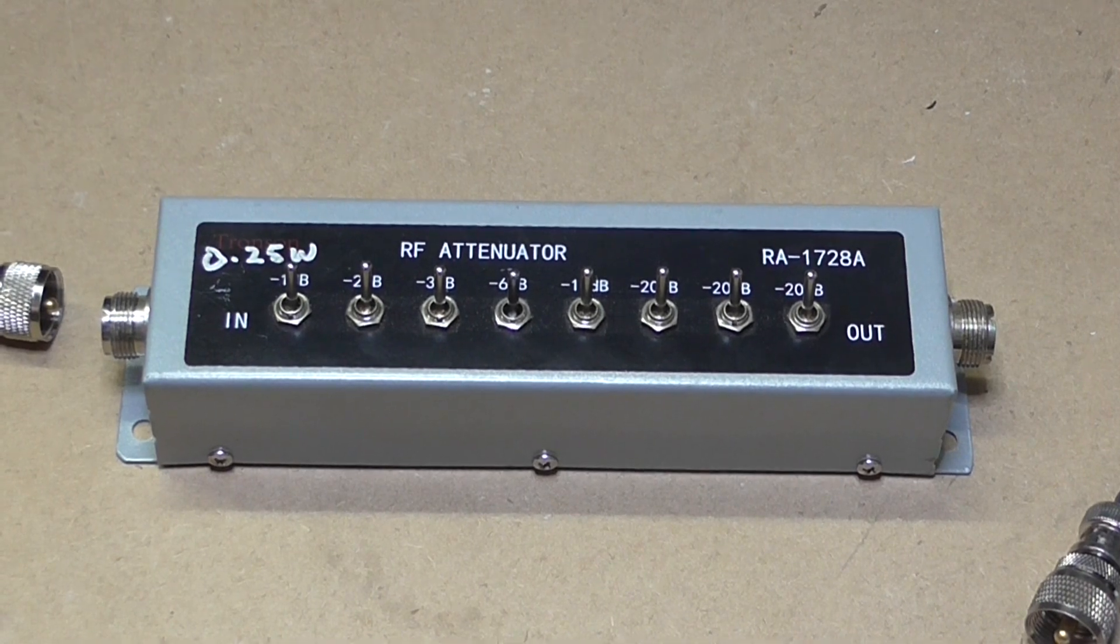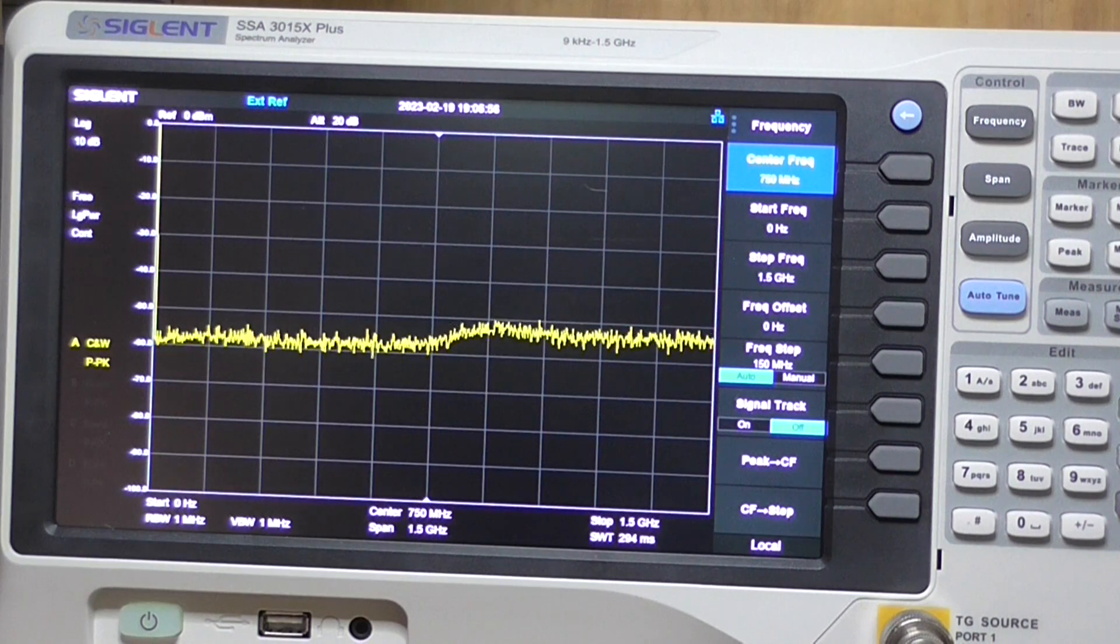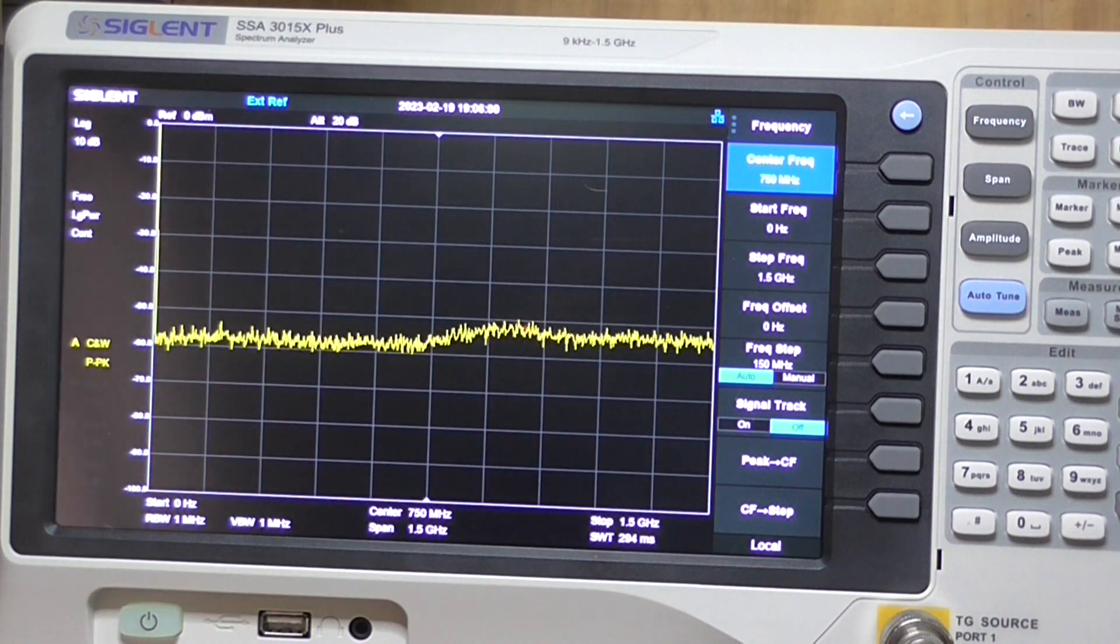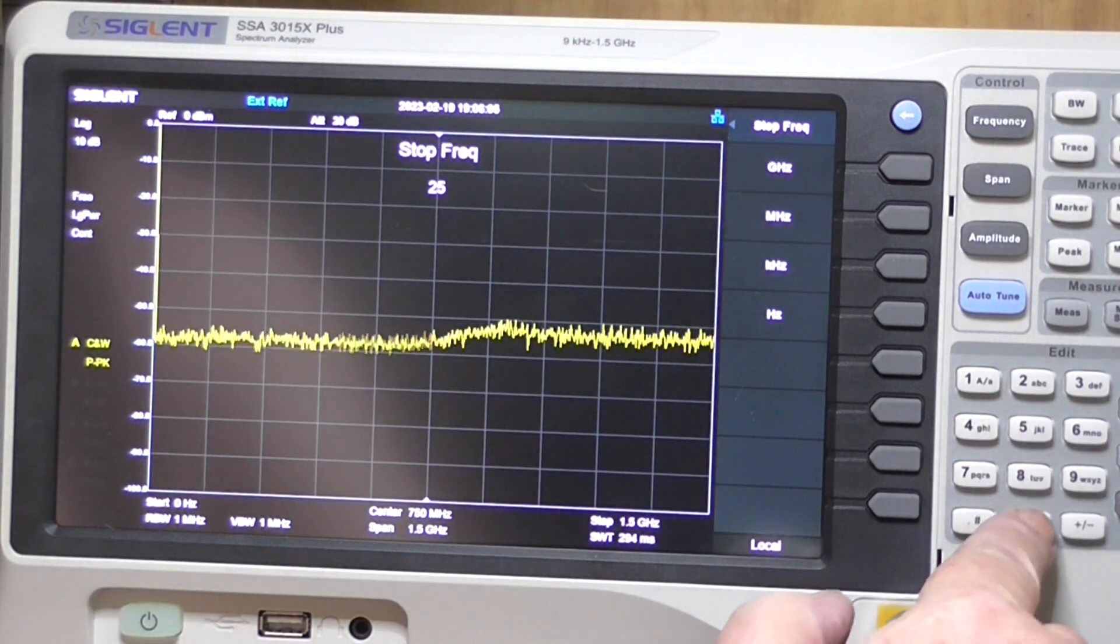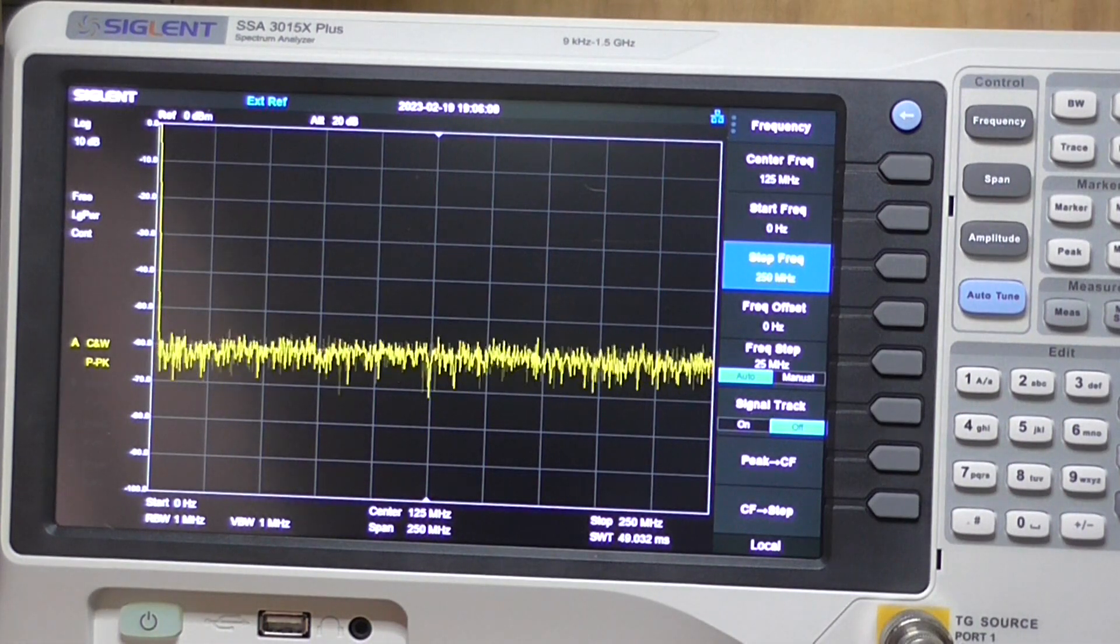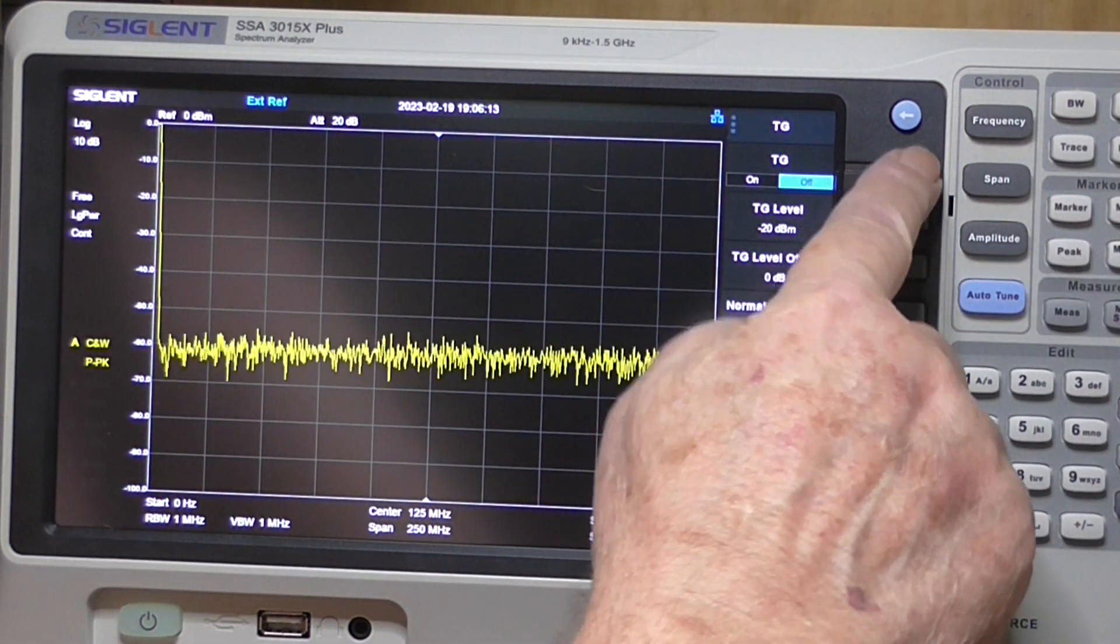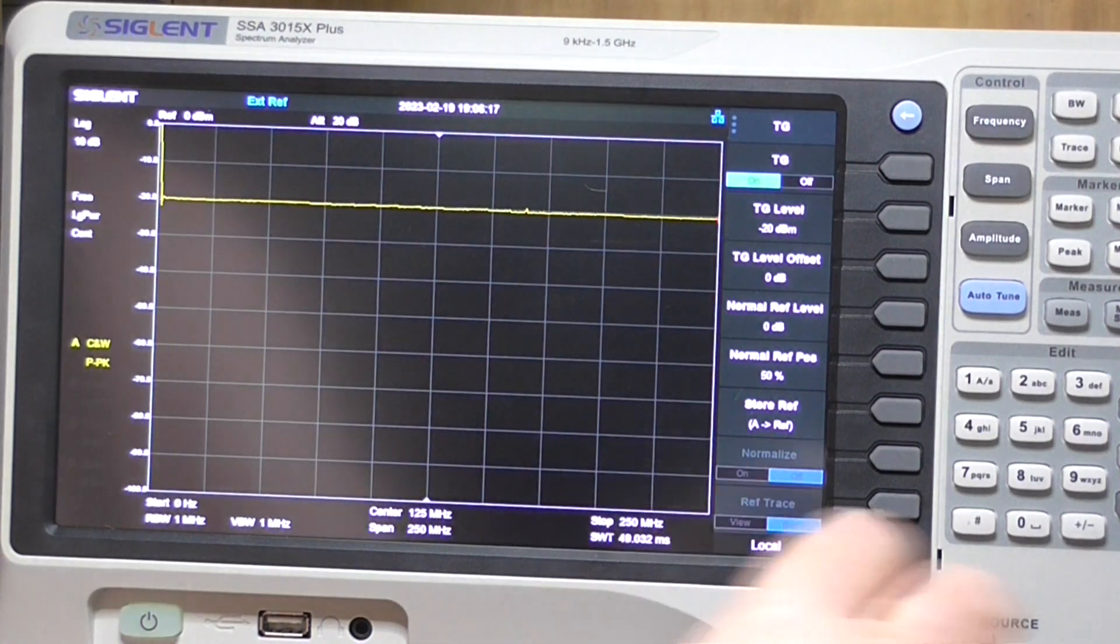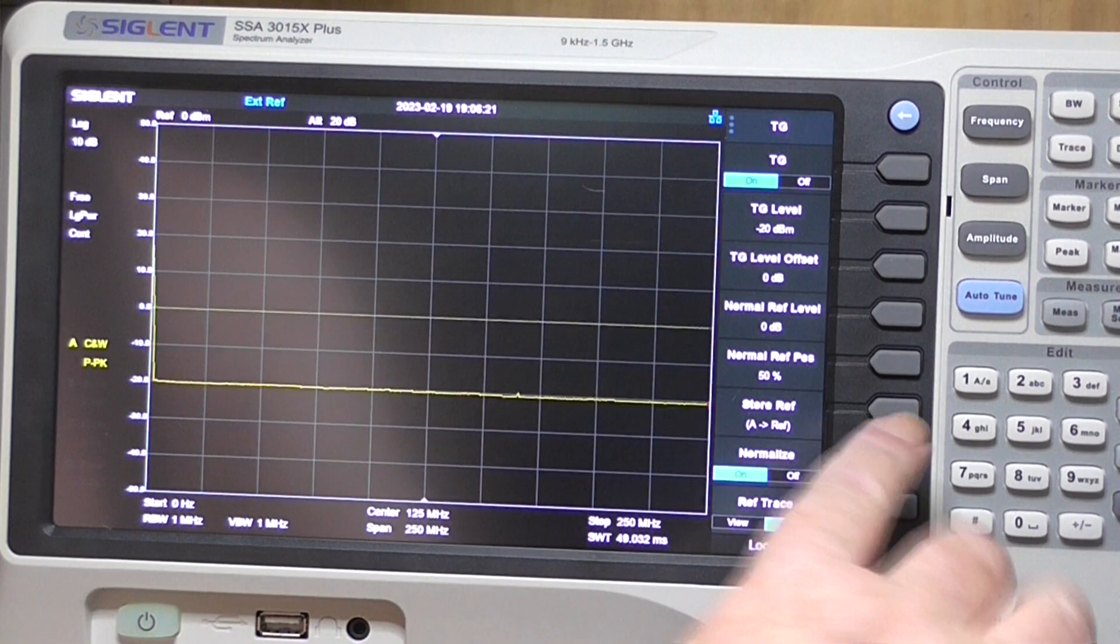Let's start by setting up the spectrum analyzer. We'll need a stop frequency of 250 megahertz and the tracking generator turned on. We'll store and normalize to zero that.